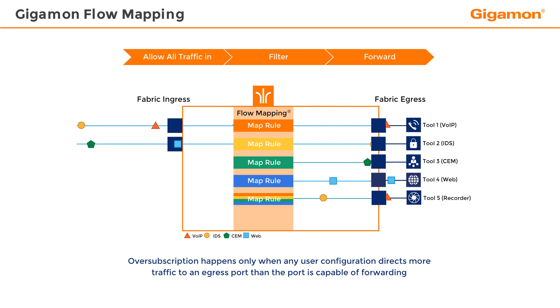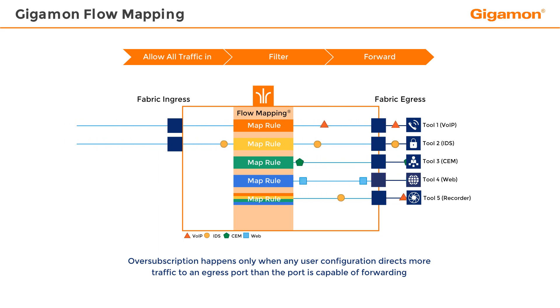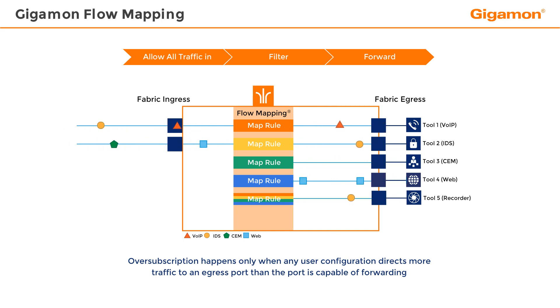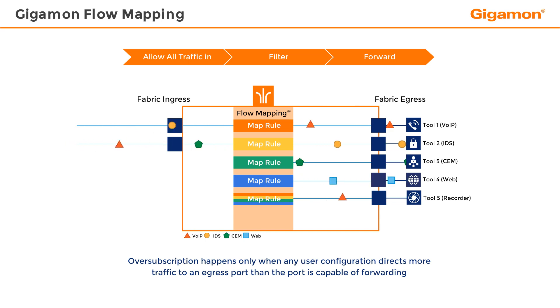An example of such a user configuration would be when traffic is explicitly sent from multiple ports to a single port, instead of sending that traffic to a load-sharing tool group or a higher-bandwidth tool.